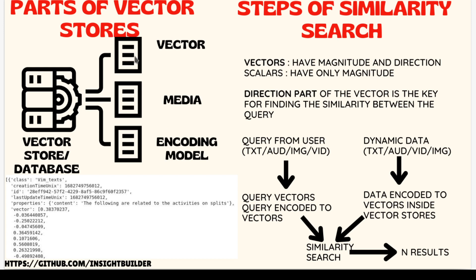Now, the steps of a similarity search. In order to do a similarity search, we need vectors. From physics, we know that a vector has magnitude and direction. The direction part of the vector is the key for finding the similarity between two vectors — this is the key concept to realize.